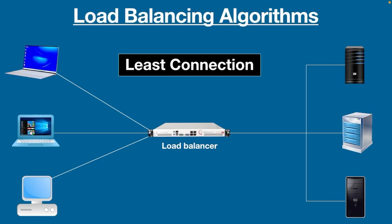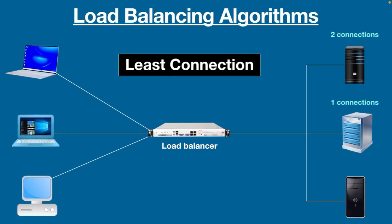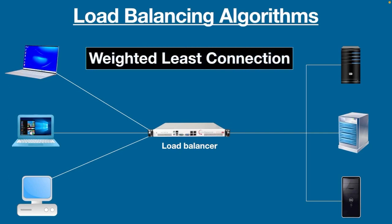Least Connection is the third algorithm. As mentioned earlier, round-robin does not account for the current load on a server, but the Least Connection method does make this evaluation and as a result delivers better performance. In this method, the load balancer checks which servers have the lowest number of active connections and sends traffic to those servers. For example, if server one has two connections and server two has one connection, when the next request comes, the load balancer connects it to the second server.